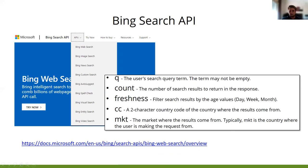You can define the query, the number of requests, the age value by day, week, or month, the country where the results come from, and the market where the results come from. These are the most simple parameters — there are more. If you want to know more about Bing Search API, you can check the link.